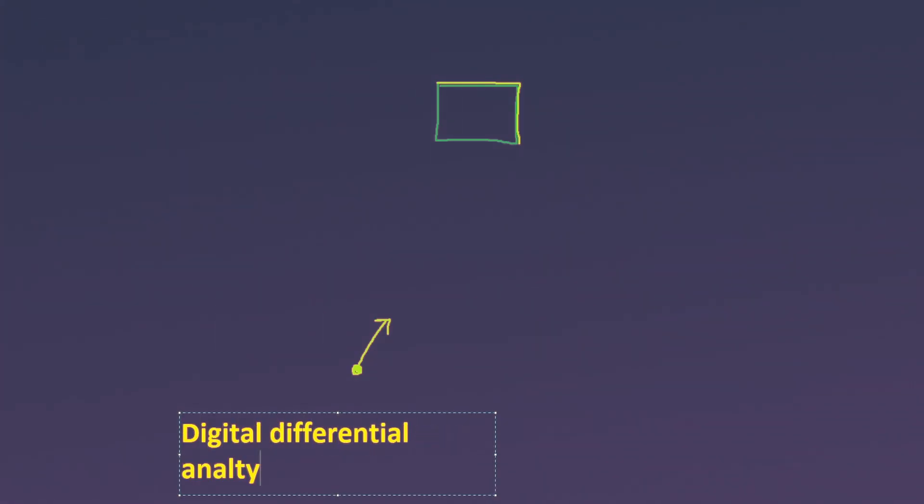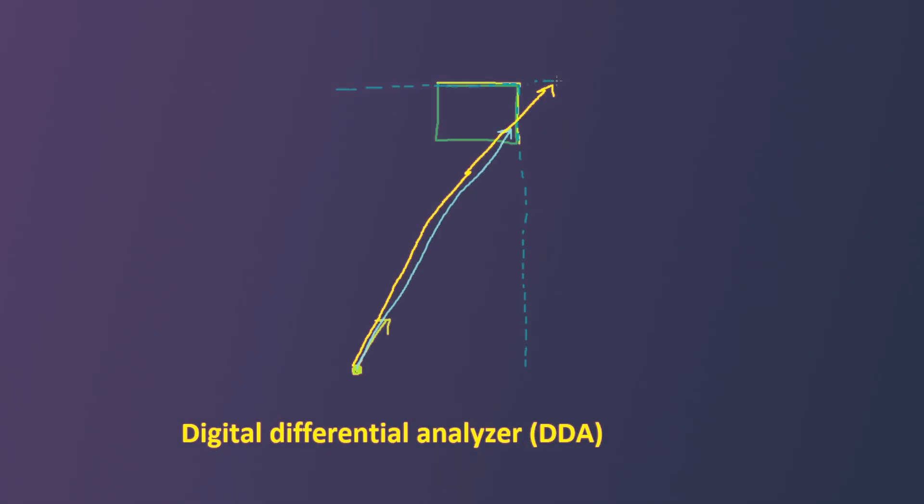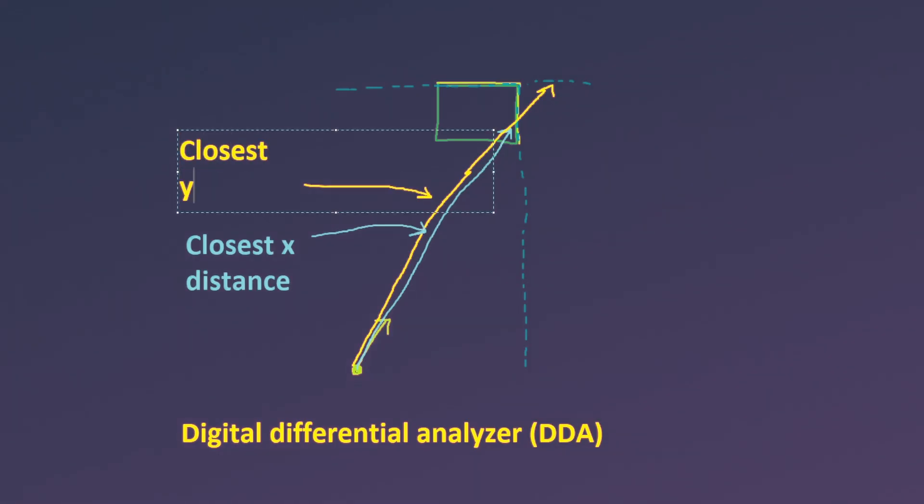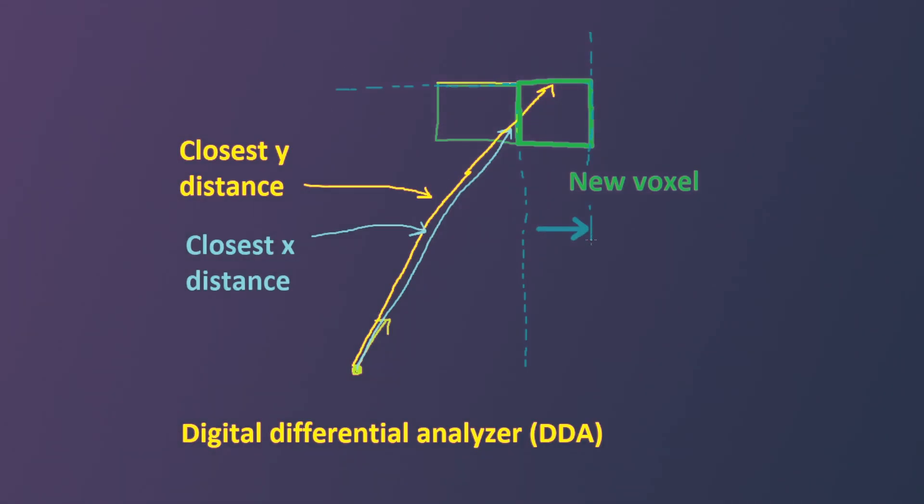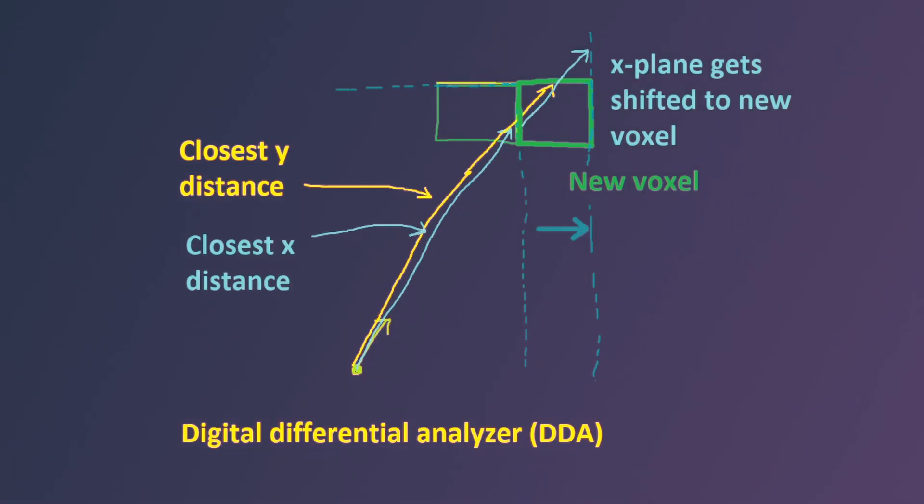A better way is to use the digital differential analyzer algorithm, or DDA for short. The idea behind DDA is that instead of recalculating these distances every step, we store the distance along the ray's path that the ray would need to travel to hit the x, y, and z plane of the current voxel. The adjacent voxel that the ray needs to move into when it steps one unit corresponds to whichever plane has the shortest distance. After stepping into the next voxel, we add length to the distance component that we just used to reflect the fact that it has to travel to the next plane farther on. This is more efficient because it only requires computations on one component for each loop, and it only uses addition and subtraction once you have the algorithm set up.